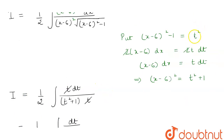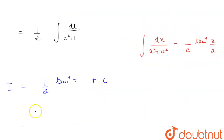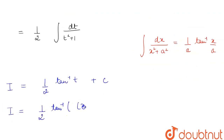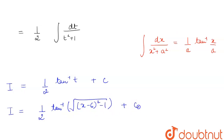Back-substituting the value of t as under root of (x minus 6) squared minus 1, our final answer is I equal to 1 by 2 tan inverse of under root of (x minus 6) squared minus 1, plus integration constant C.